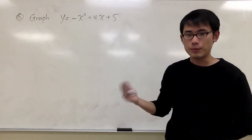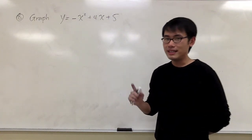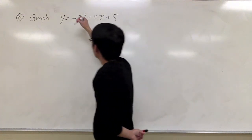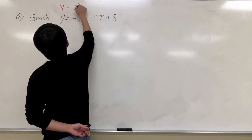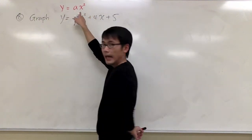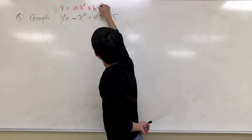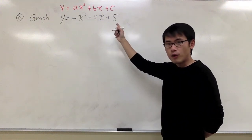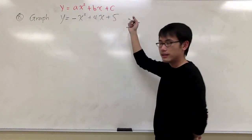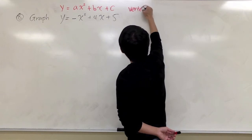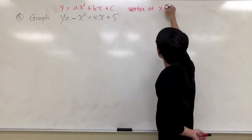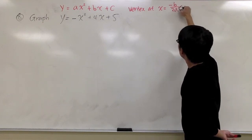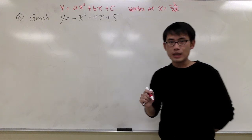Whenever we are trying to graph an equation for parabolas, what we need first is to find the vertex. We have the form y equals ax squared plus bx plus c, which is standard form. The vertex is going to be at x equals the vertex formula, which is negative b over 2a. That's the first number we need to calculate.